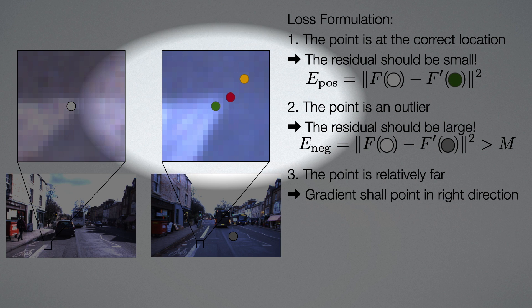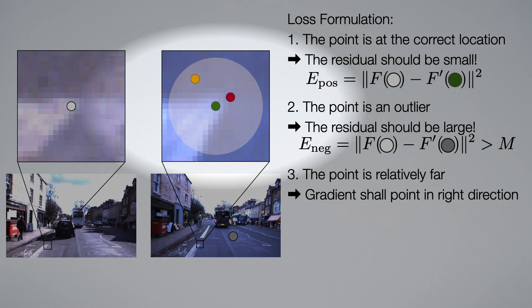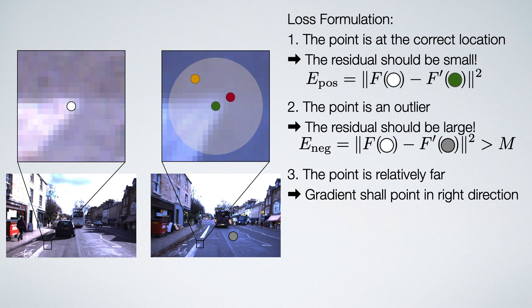For this, we sample a point in a relatively large vicinity of the ground truth, for example here. Then we compute the update for only this point, which is basically Lucas-Kanade tracking. In this example, this yields the yellow point.